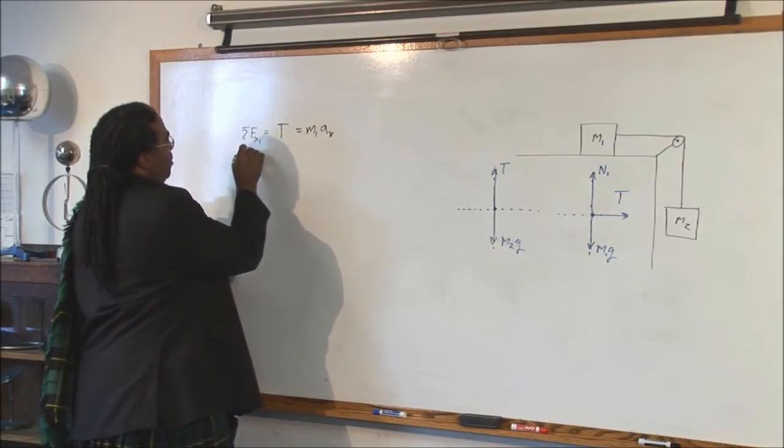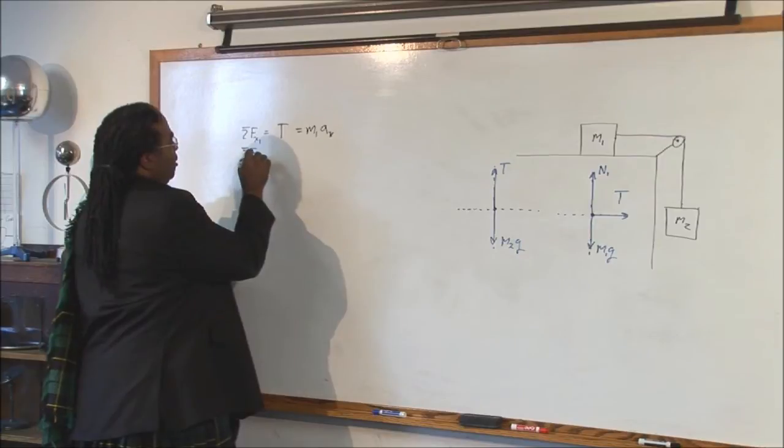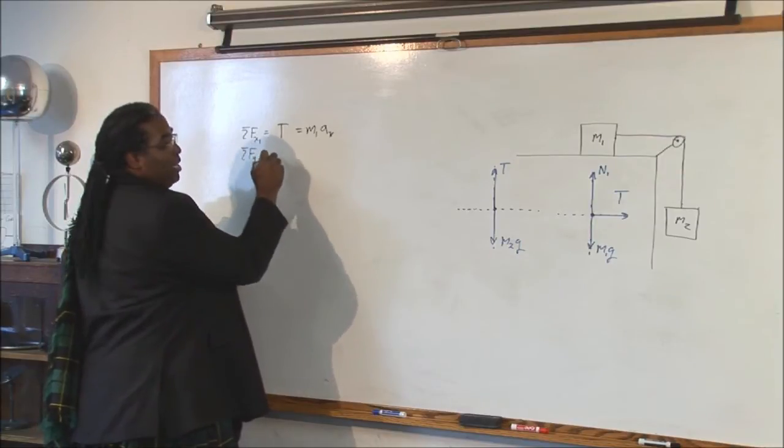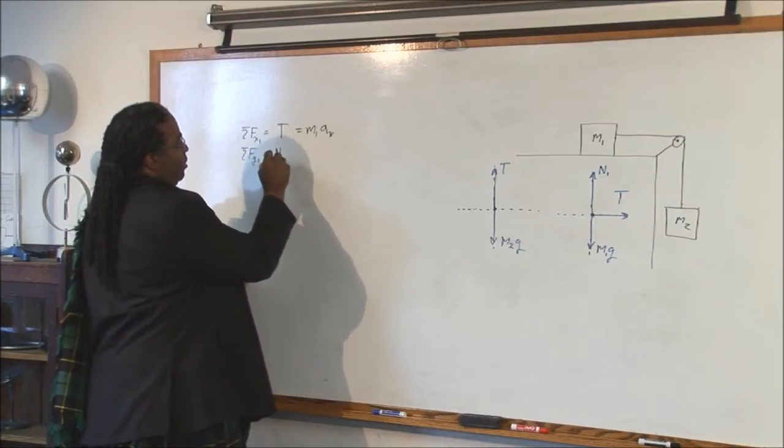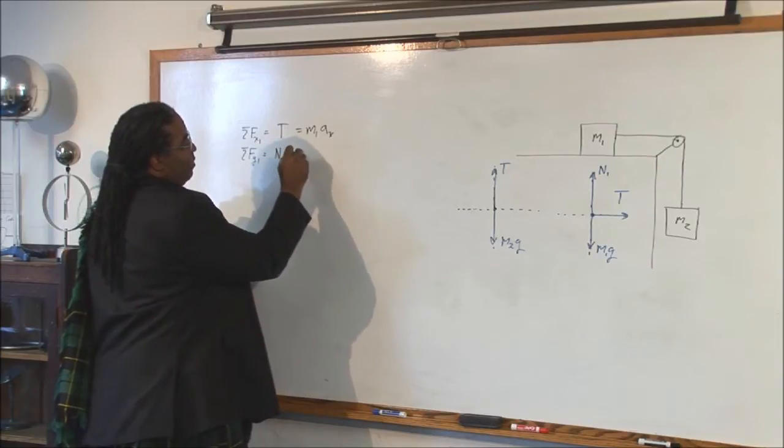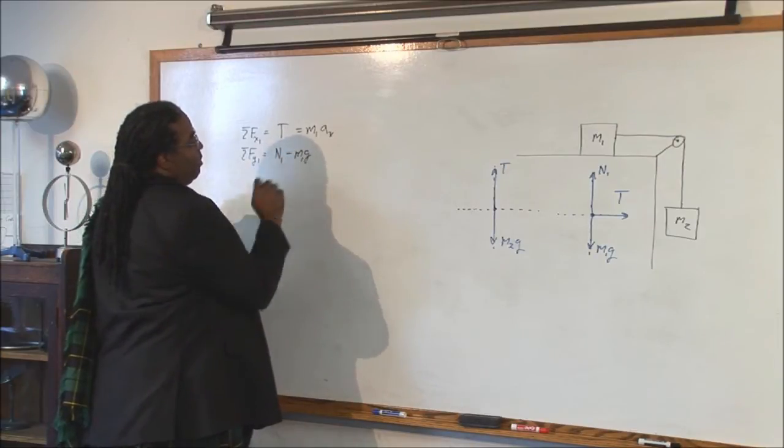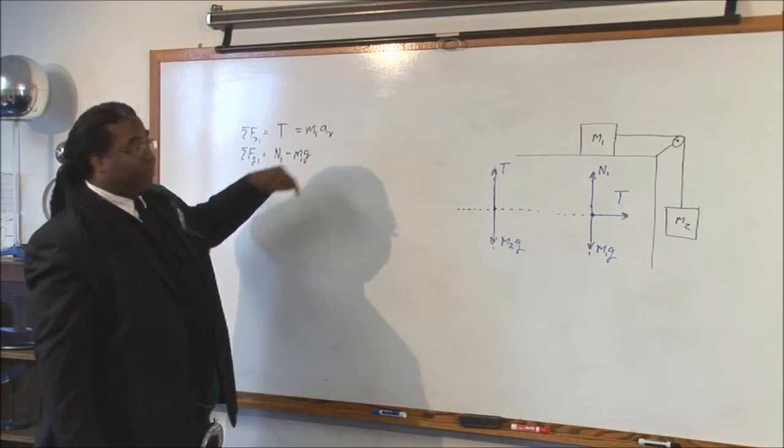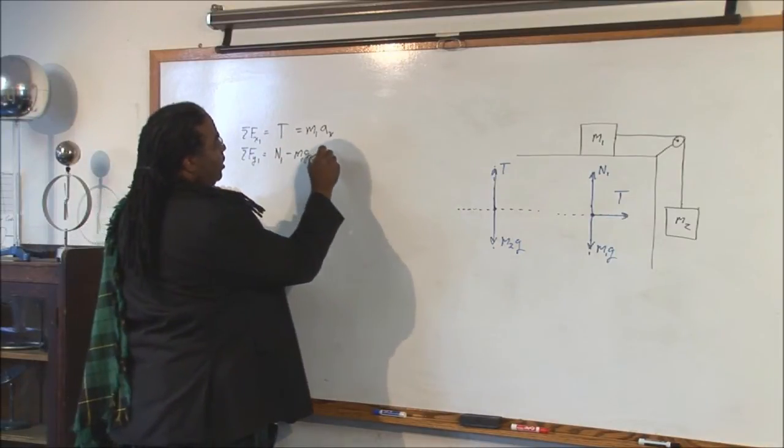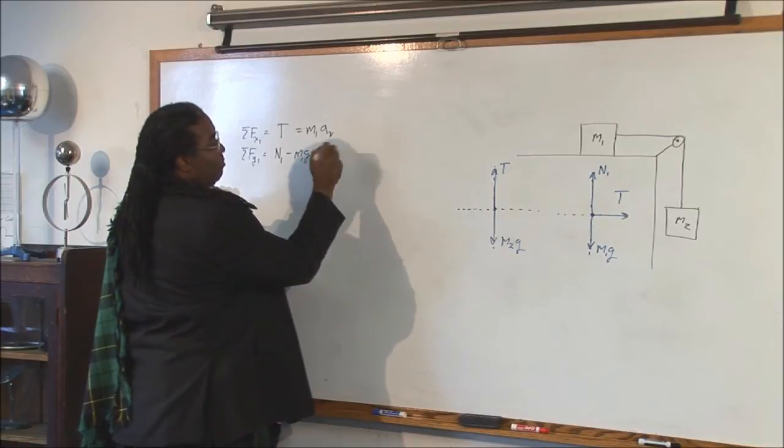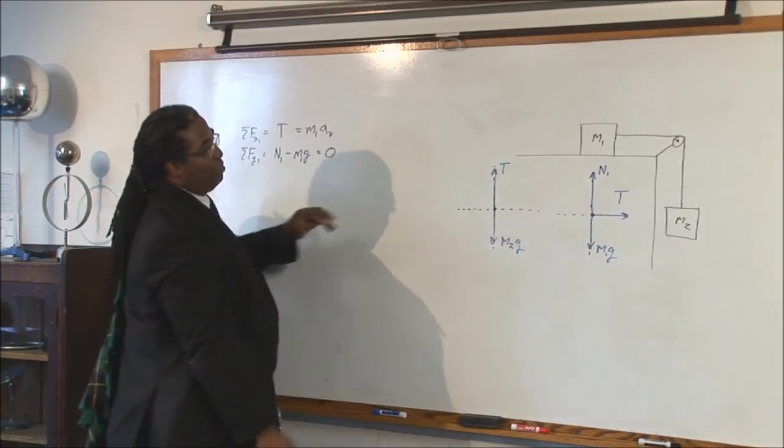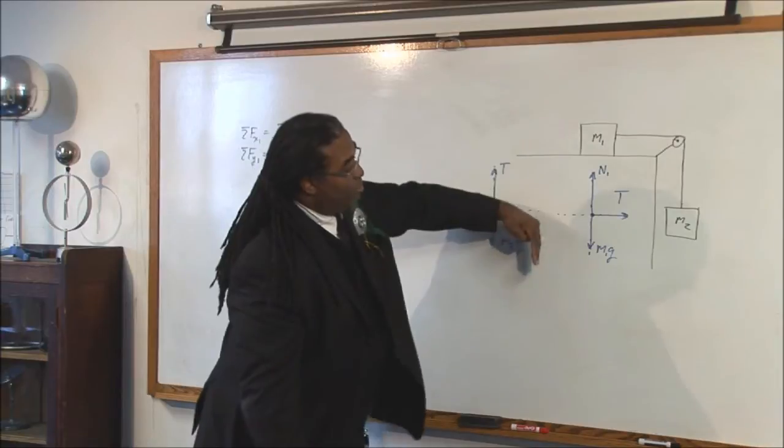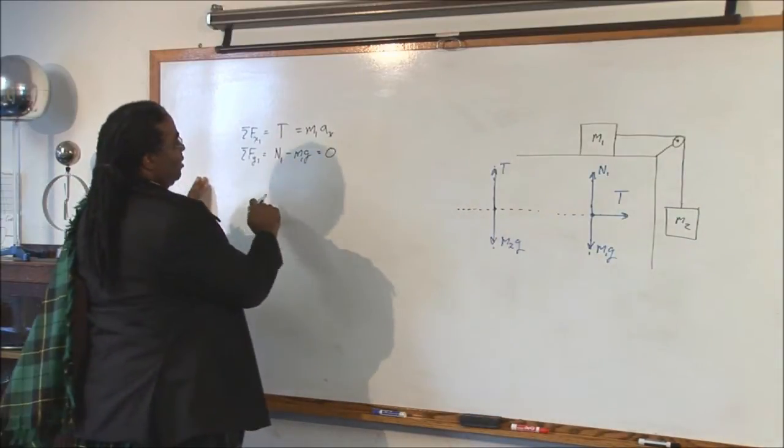Then, the sum of the forces in the y direction on block one, you have the normal force and you have m1g. The normal force is up, so it's positive. The gravitational force is down, so it's negative. And that's equal to zero because we know it's not moving off the table. It's not moving through the table, so we know that's equal to zero.